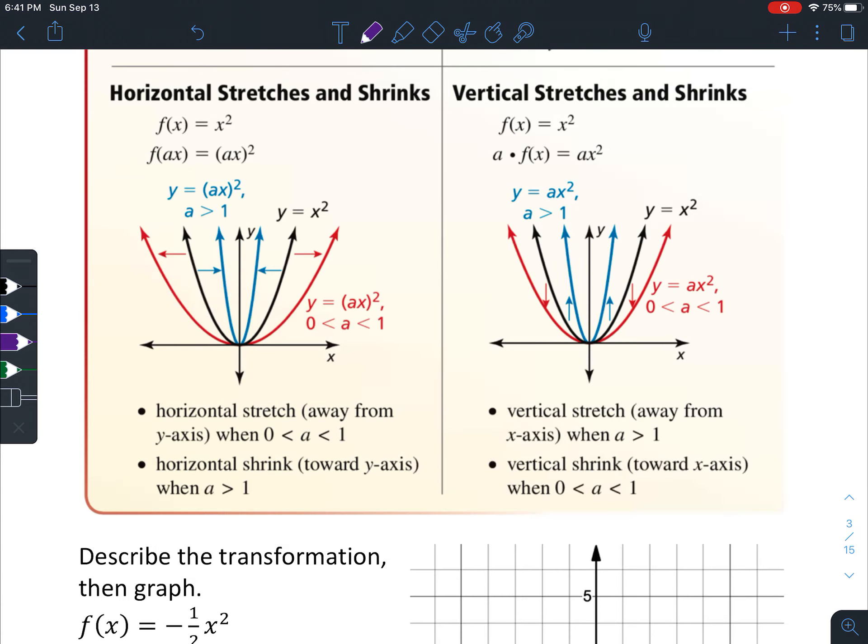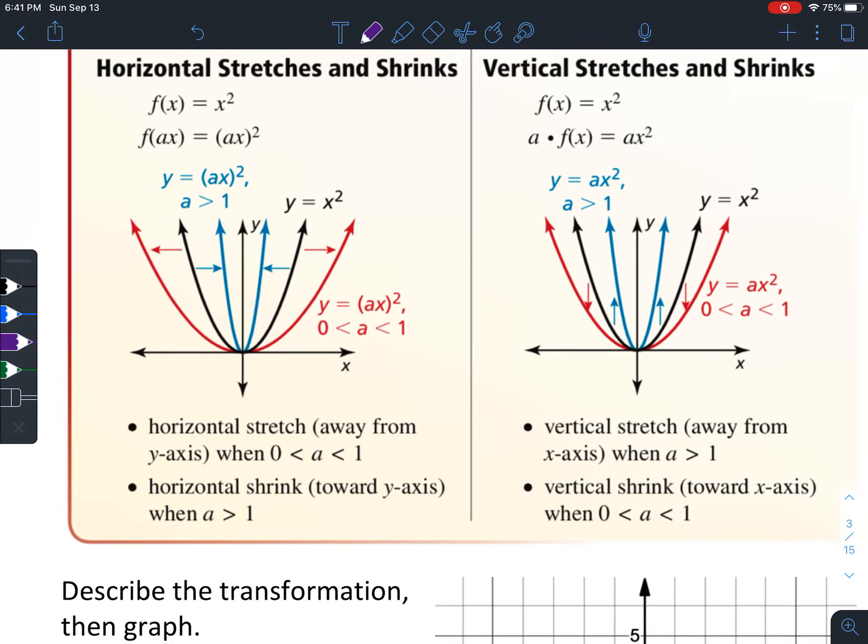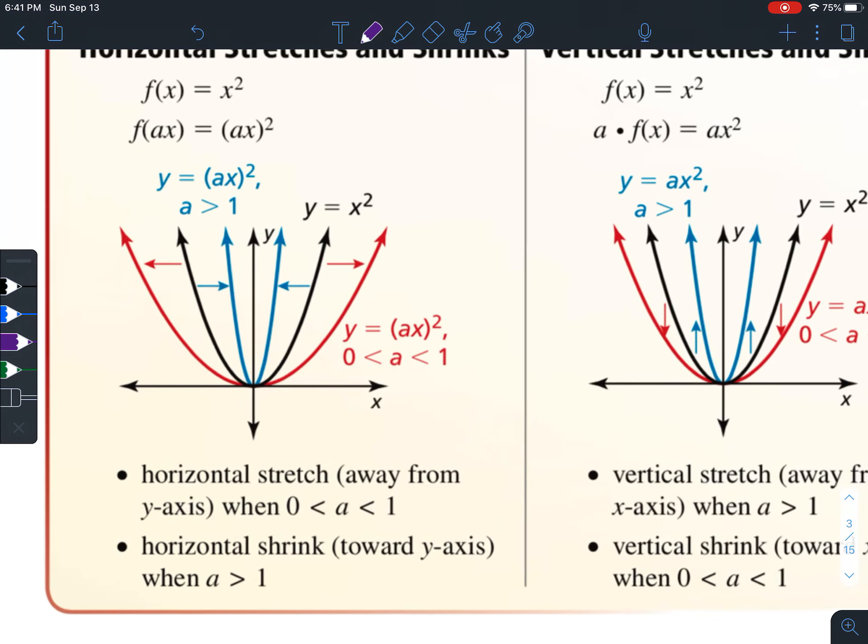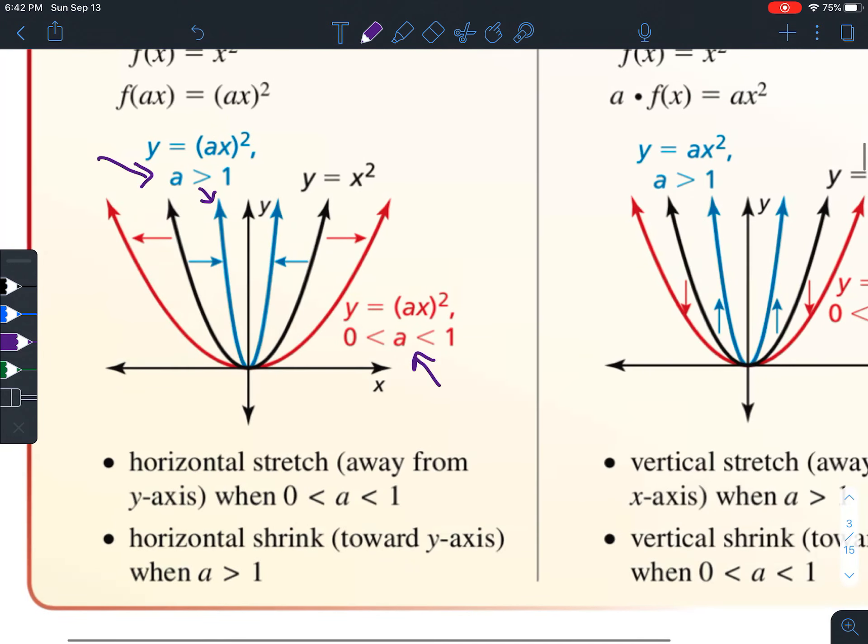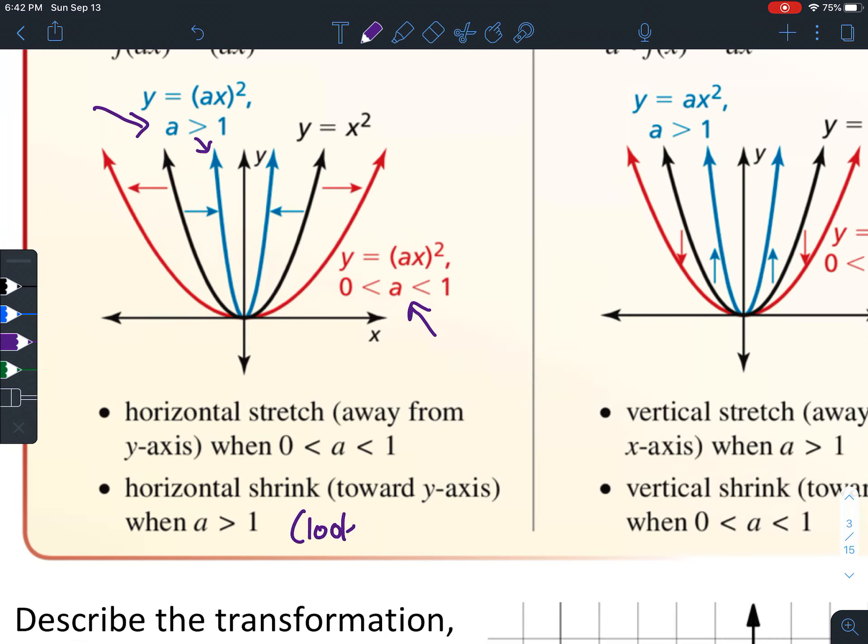The horizontal stretch and shrink. Here's one thing that's important so you can know what things look like without having to graph them all the time. When a is greater than 1, a is the number that's in front of the x-squared. When it's greater than 1, it means that the parabola is going to be stretched. It's going to look thinner, but it's actually stretched upward. And when it's between 0 and 1, so it's going to be a fraction or decimal, then it's going to be a shrink, which means it looks wider.